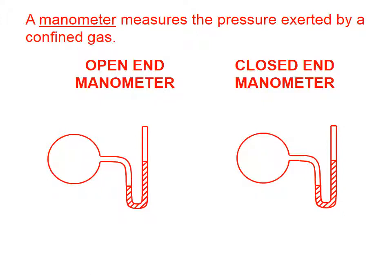A manometer measures the pressure exerted by a confined gas. On the left, we have an open-end manometer, and on the right, a closed-end manometer. In each case, our confined gas is in this bulb.